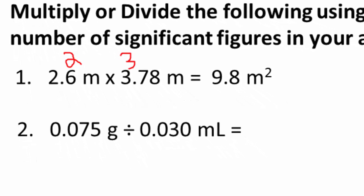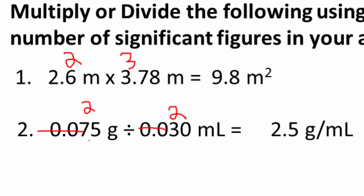Next: 0.075 grams divided by 0.030 milliliters. Using the Pacific-side rule, we start from the left and draw through leading zeros, leaving 2 significant figures in 0.075 and 2 significant figures in 0.030. So we want 2 significant figures in our answer. Dividing gives 2.5 grams per milliliter.